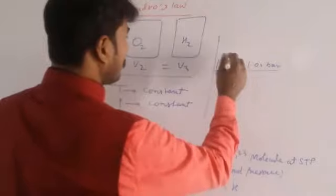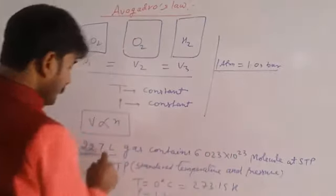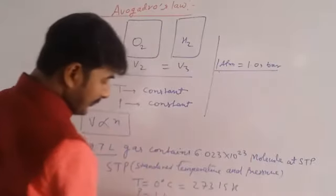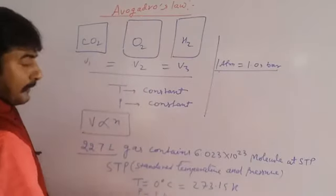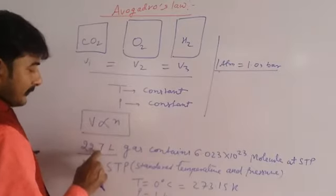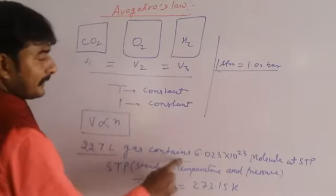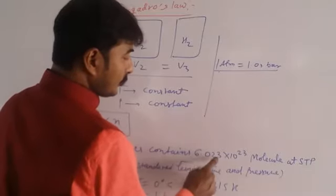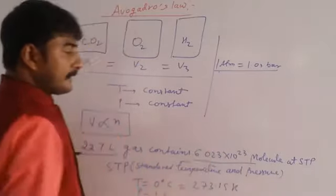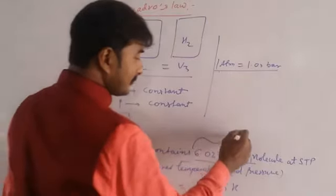If we take atm, here it's 0.4. If we take bar unit for pressure, in STP we take bar, then here it's 0.7. 22.7 liter gas contains 6.023 into 10 power 23 molecules.